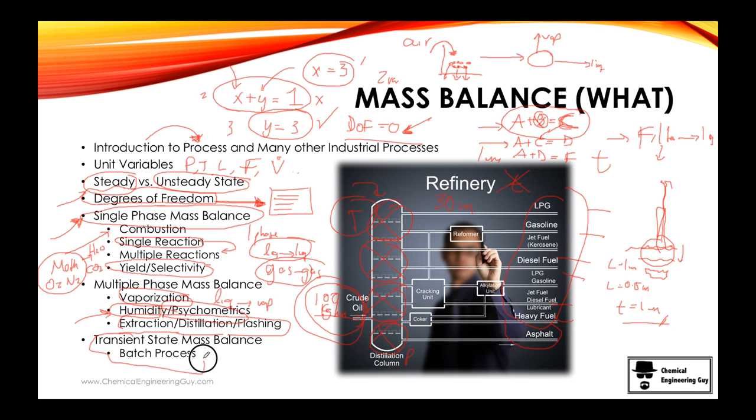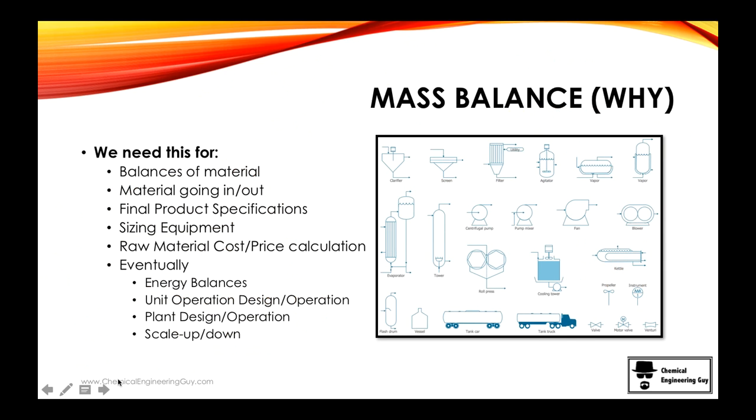And eventually we revisit transient state, which is essentially the same as unsteady state. Transient state is typically batch processes. So that was the what. What do we see? But probably you're wondering why do we need this?